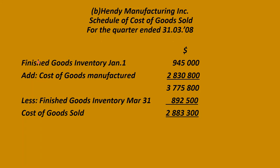This part asks for a schedule of the cost of goods sold for the quarter ended. We start with the finished goods inventory at the beginning of the period and add the cost of goods manufactured — this comes from the manufacturing account and replaces purchases in a retailer's business. Then we minus the finished goods inventory at the end, and we can compute the cost of goods sold using the same formula as a trading account.